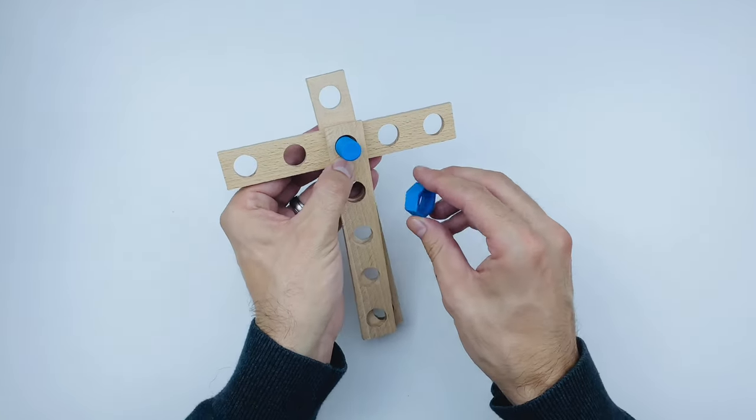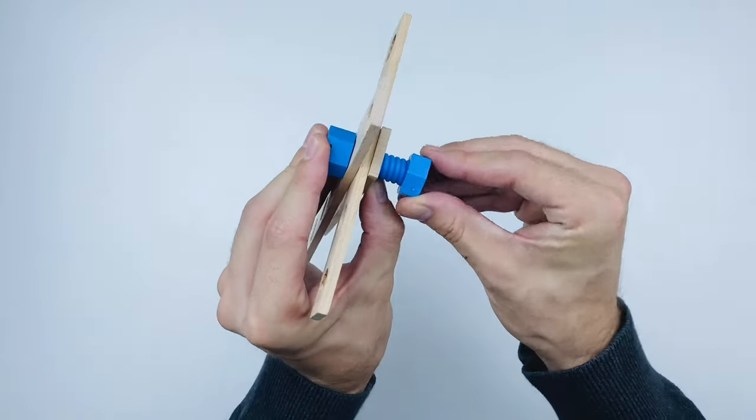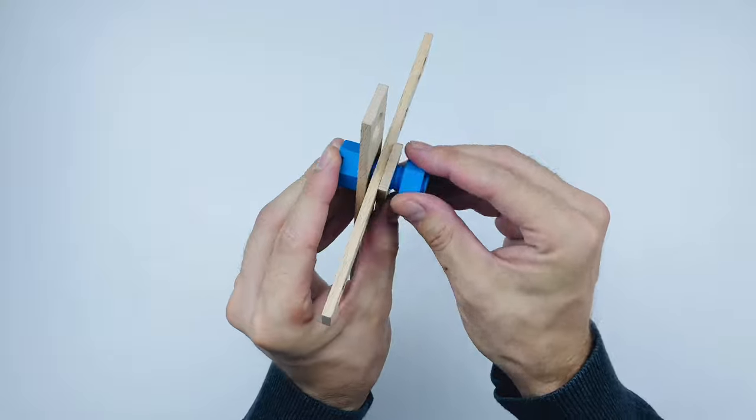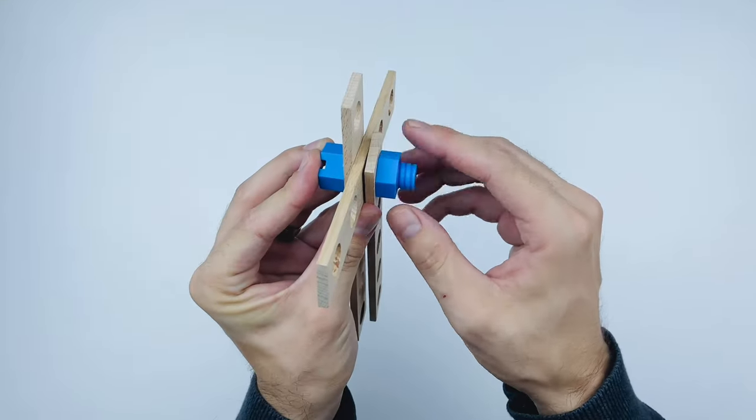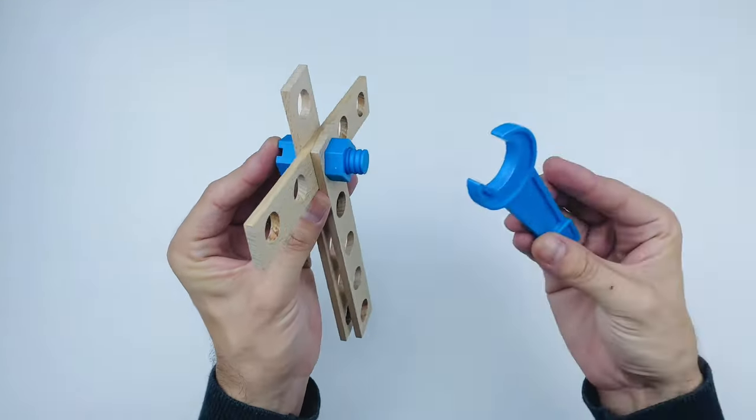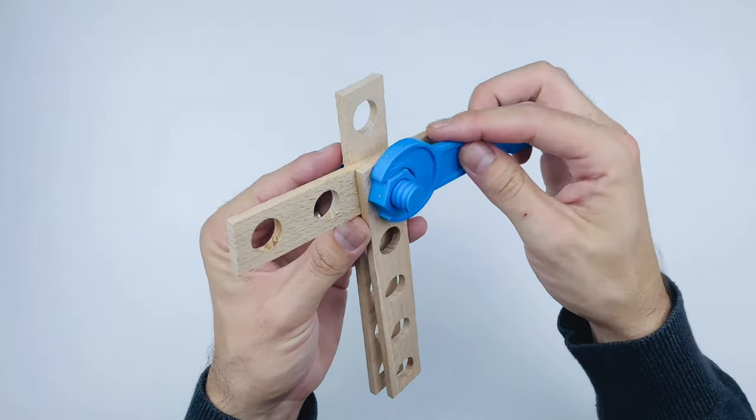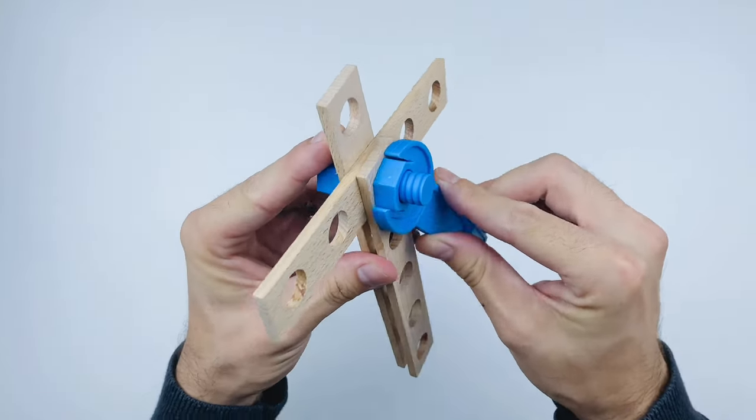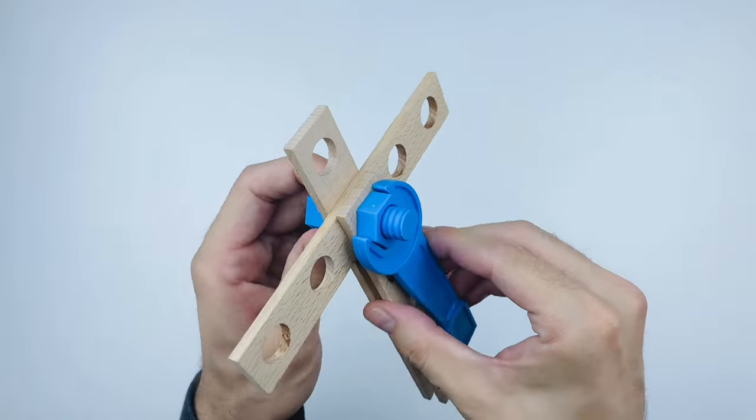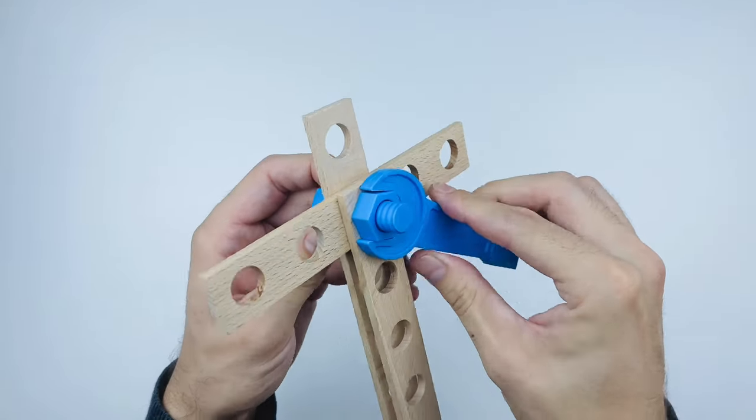Now this is where the wrench comes in handy. We can tighten this bolt all the way there. And we can use the blue wrench to make it nice and properly tight. There we go.